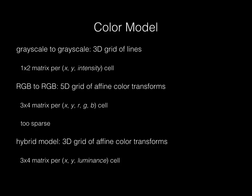Therefore, we use a hybrid model. The grid is still 3D, where the axes are x, y, and luminance. But within each cell, we fit a full 3x4 affine model from input color to output color. This model lets us effectively model color transforms while still respecting luminance edges in the input.